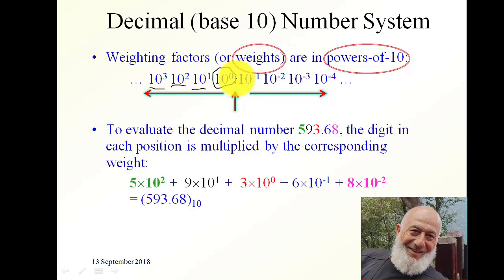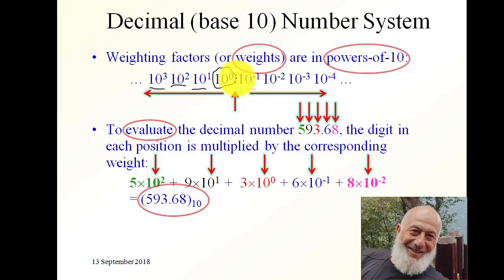To evaluate the number 5.98: the value of 5 is 5 times its weight, which is 10 squared; plus 9 times 10 to the power minus 1; plus 8 times 10 to the power minus 2. Adding these together gives the value of the number. In binary numbers the weights are powers of 2, and the digits used are 0 and 1.